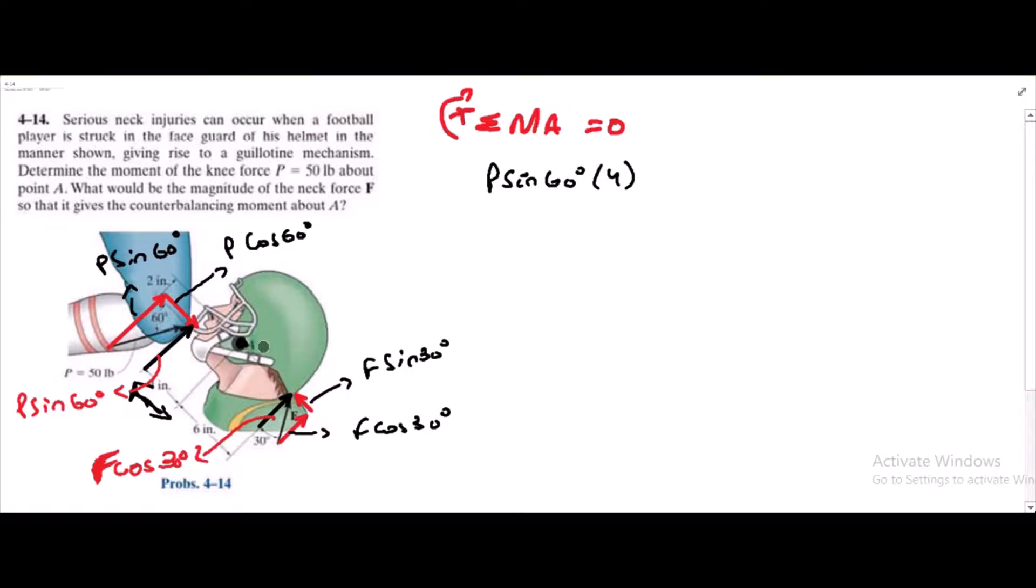And it has a moment arm about point A of 4 inches vertical distance. And then, it is trying to rotate. The horizontal component is trying to rotate about point A clockwise. So we are taking it as positive. And if we look at the vertical component which is P cos 60. And the moment arm about point A is 2 inches. This long. Which is given.